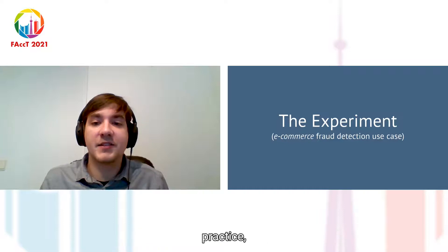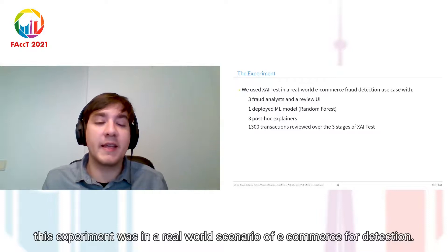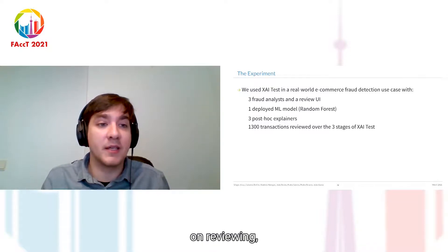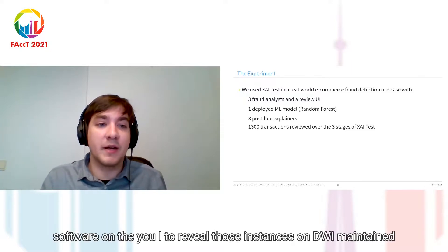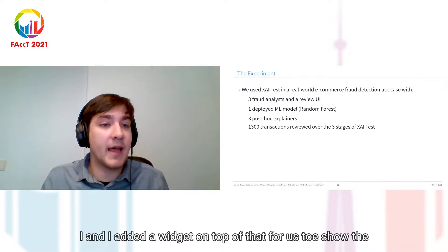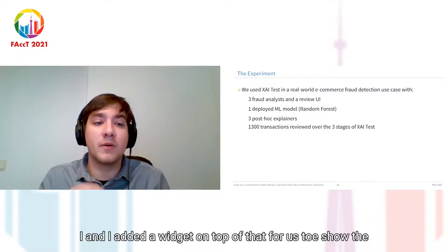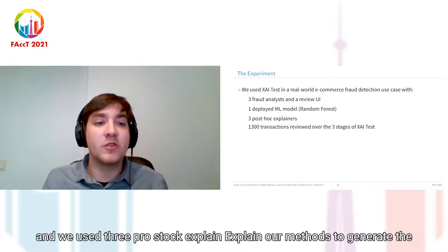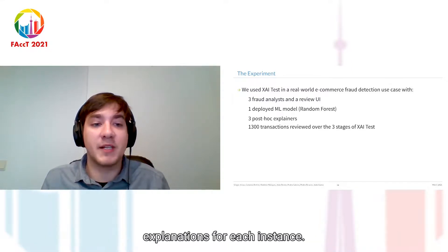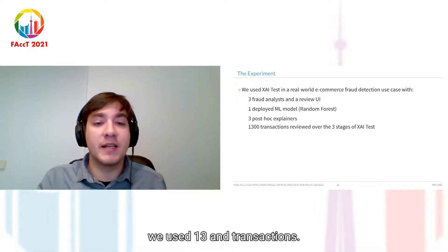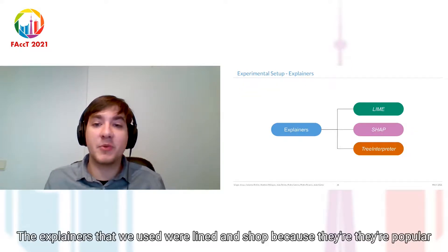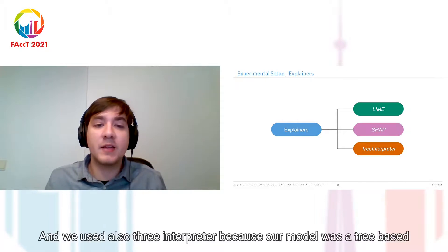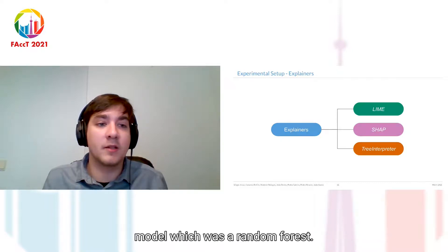To put this methodology into practice, we made an experiment in a real-world scenario of e-commerce fraud detection. We asked three fraud analysts to help us with their expertise on reviewing instances. They usually have a software and a UI to review those instances, and we maintained that UI and added a widget on top to show the explanations. We used historical data and a model from that period, and we used three post-hoc explainer methods. In total, we used 1,300 transactions. The explainers were LIME and SHAP, because they are popular in the literature, and also TreeInterpreter, because our model was a tree-based model — a random forest.